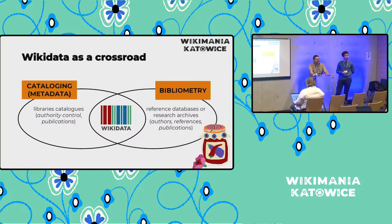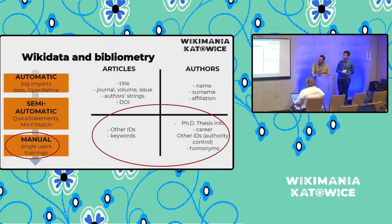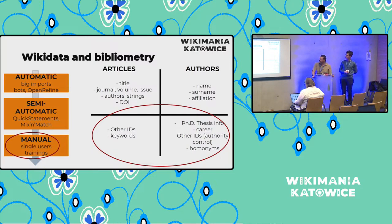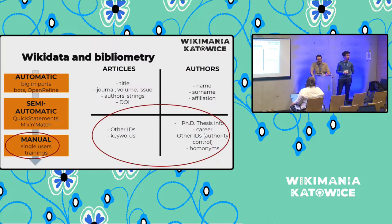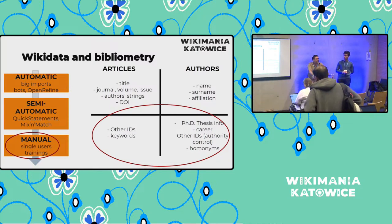Wikidata sits right in the middle, because when it produces items of authors it can function in both sectors. There is a graph model: at the top is core information — for articles, the title, journal, and volume; for authors, the name and surname as a string. This is the information you can extract with just a PDF in hand. The second layer adds more valuable information: additional identifiers beyond DOI, and for authors, their academic career, thesis, thesis supervisors, and so on.